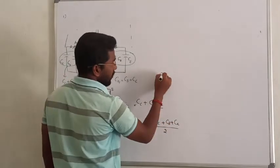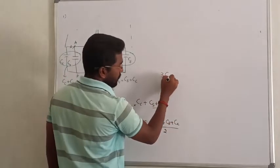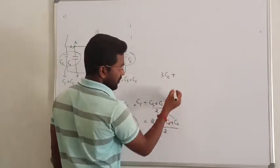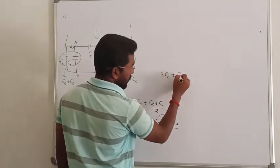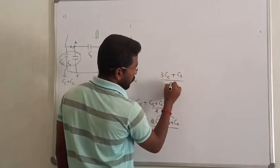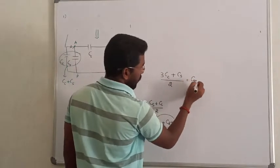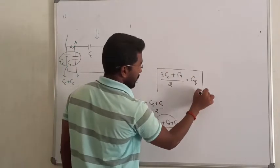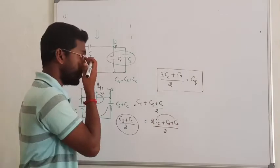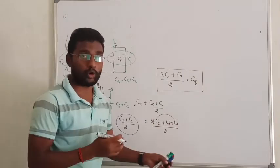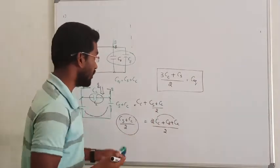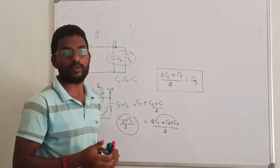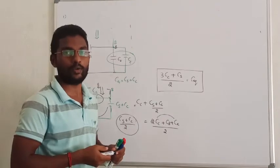So what is the overall answer? 2CC plus CC becomes 3 times CC, plus CS, all divided by 2. So the C equivalent for the given circuit is (3CC plus CS) divided by 2. That is the correct answer. I hope you understand — drop your doubts in the comment section. Thanks for watching.